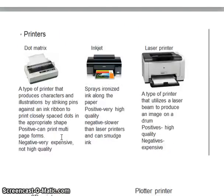A dot matrix printer is a type of printer that produces characters and illustrations by striking pins against an ink ribbon to print closely spaced dots in the appropriate shape. A positive is that it can print multi-page forms. Negatives are that it is very expensive and the quality is not as good as other printers such as inkjet or laser printers.